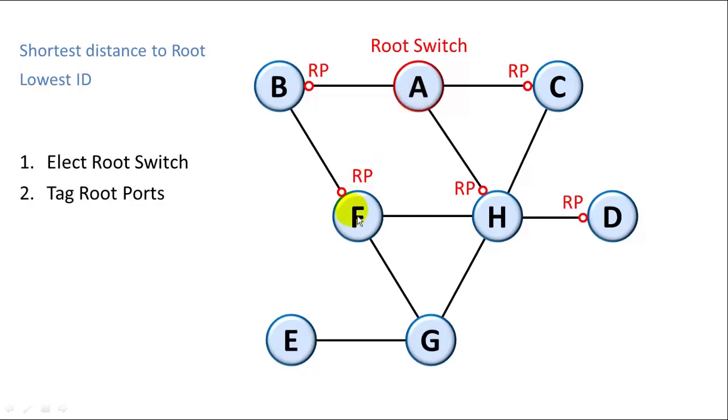Switch F has two options. It can go through B or through H. But again, we use the shortest distance and the lowest ID. Since both of those two routes have the same distance, we use the one with the lowest ID, which is B. So F labels this port its root port.